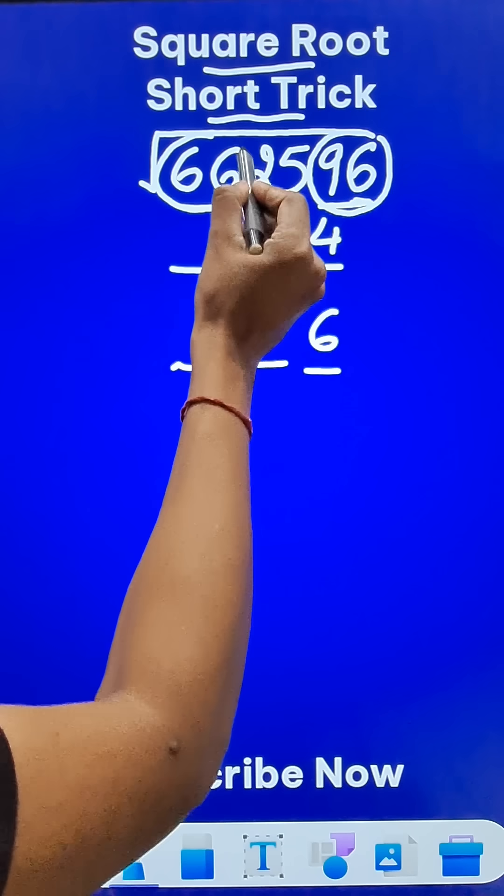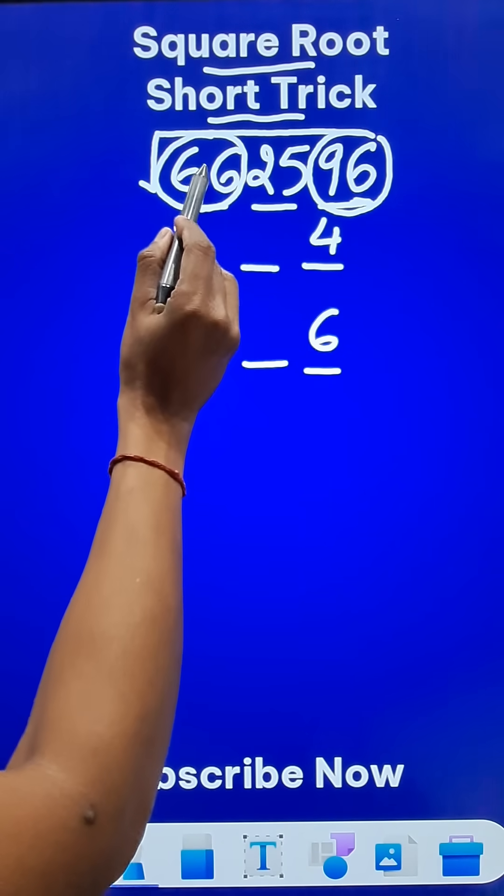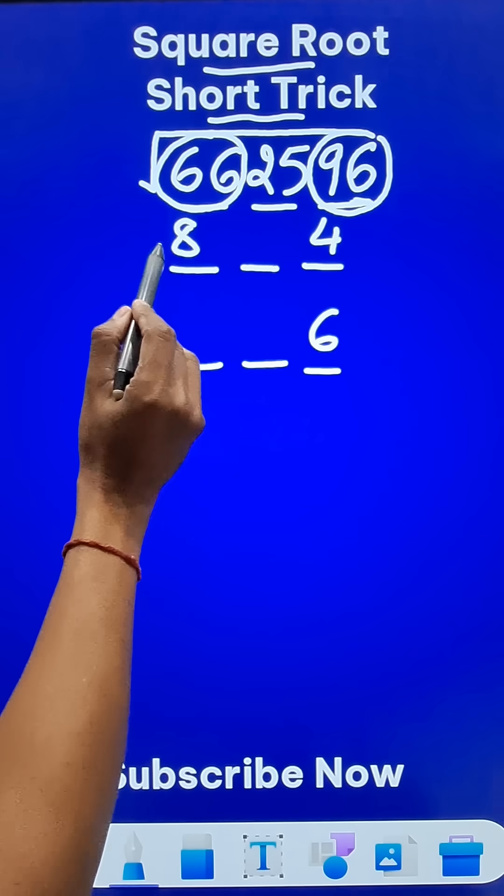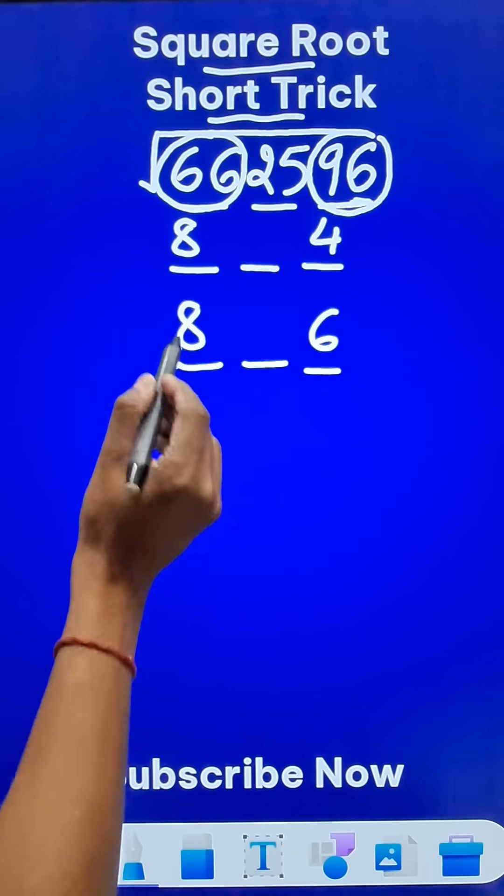Now look at the first pair, 66. 8 square is very close to 66 and just below 66. 8 square is 64. So 8 occupies the first place.